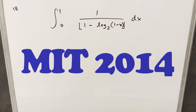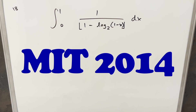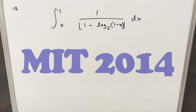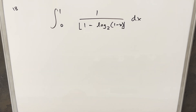We have here today a pretty tricky integral. We've got one from the MIT Integration Bee 2014. This is problem 18. We have the integral from 0 to 1 of 1 over the floor function of 1 minus log base 2 of 1 minus x, dx.